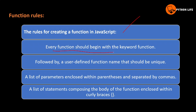Every function should begin with the keyword 'function'. So 'function' is a keyword for starting. Followed by a user-defined function name that should be unique. You can use an identifier as the name. This list of parameters is included within the parentheses and separated by commas.